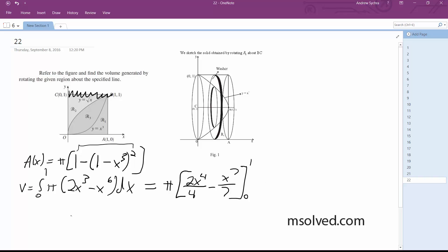Which simplifies down to π times one-half minus one-seventh, giving us V equals 5π over 14.